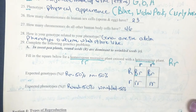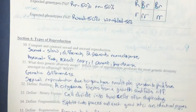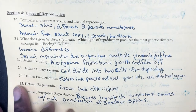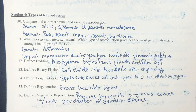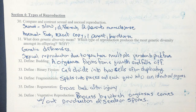Section 4 is over types of reproduction. Compare and contrast sexual reproduction to asexual reproduction. Sexual reproduction is slower, involves different alleles, requires two parents, requires more time and more energy, but is more genetically diverse. Asexual reproduction is faster, makes an exact copy or clone, requires only one parent, and is less diverse.